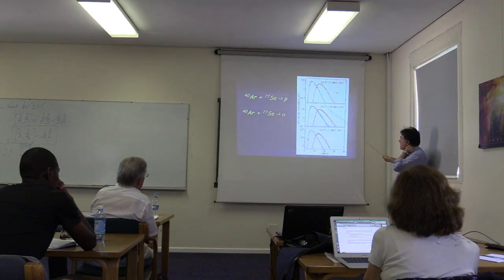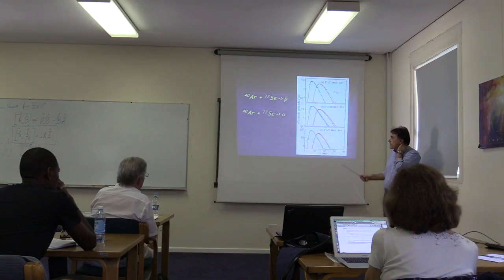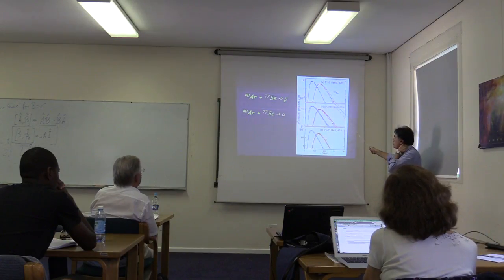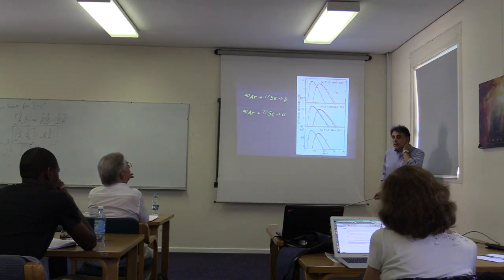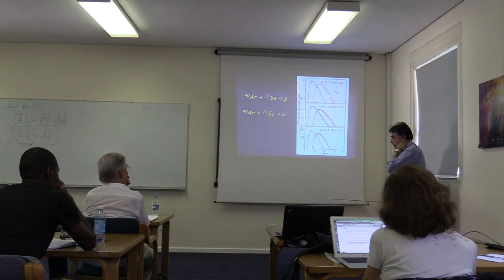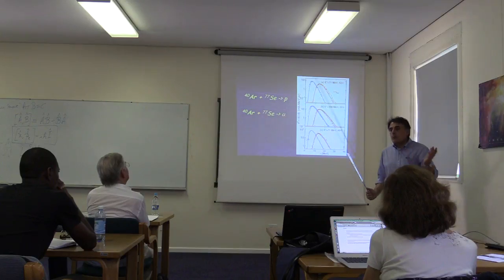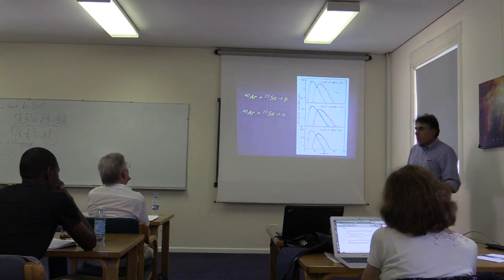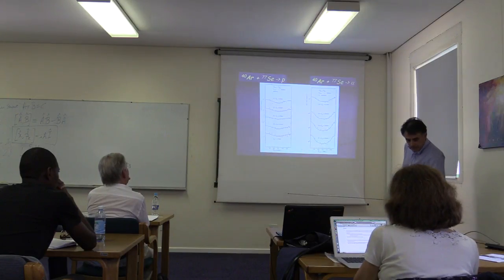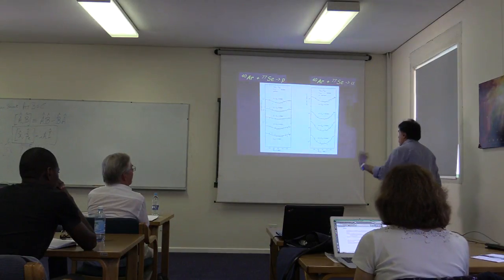So no matter what is the energy of the projectile, these are three cases at different energy, the shape of the spectra looks more or less the same. Some kind of continuous distribution. How to explain and how to combine the effect we see before and the effect we have now? We can continue.